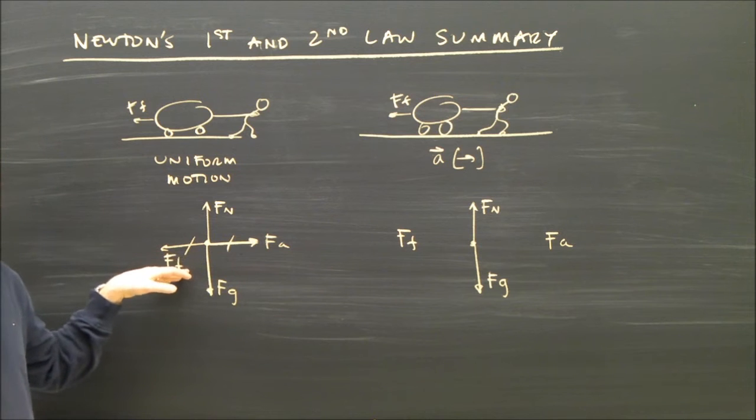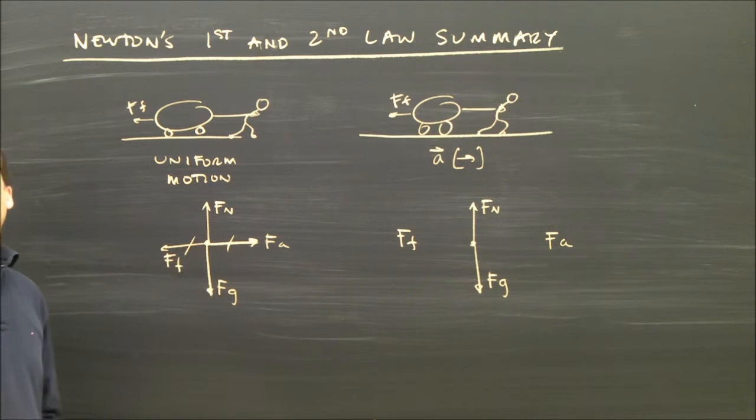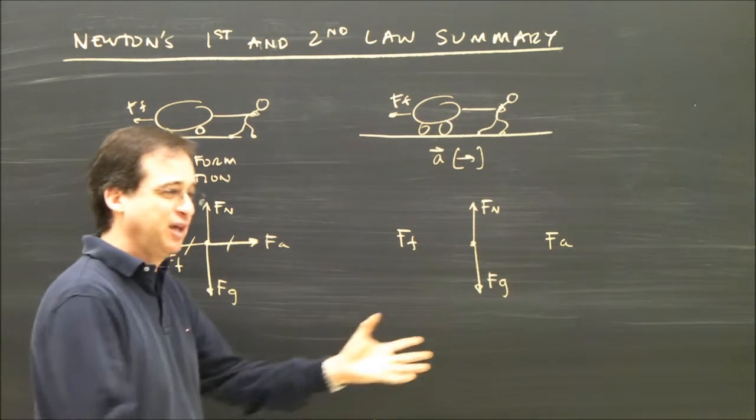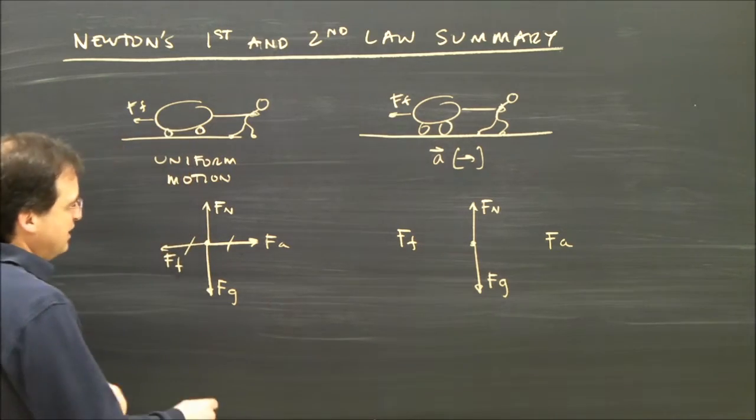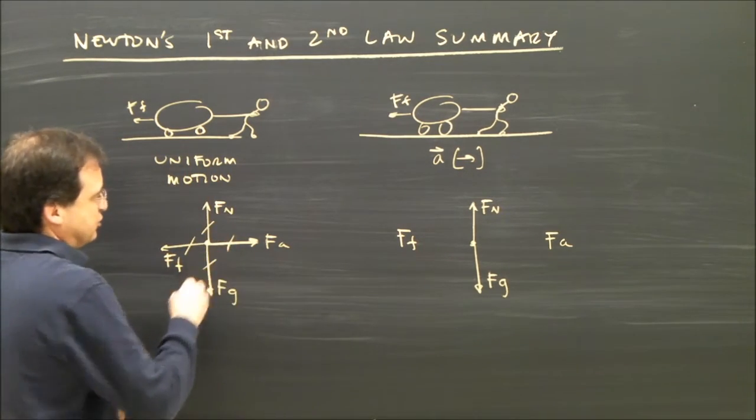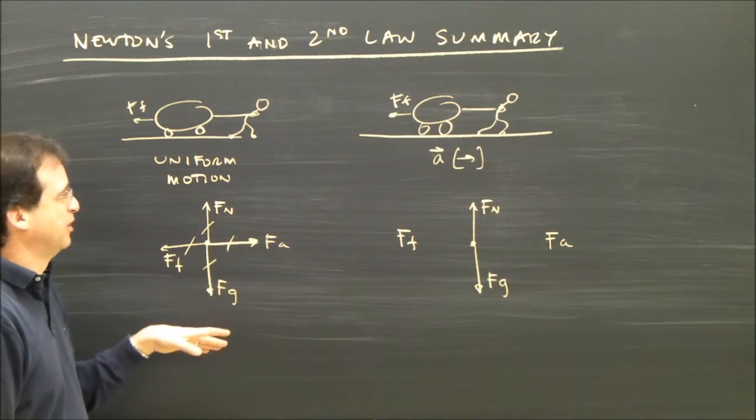Well, the applied force is equal to the friction because they've got to be the same, so then I must be pulling with 50 Newtons. And the object will keep moving with uniform motion. It's not accelerating up or down, so these two are also equal because there's nothing else up or down.